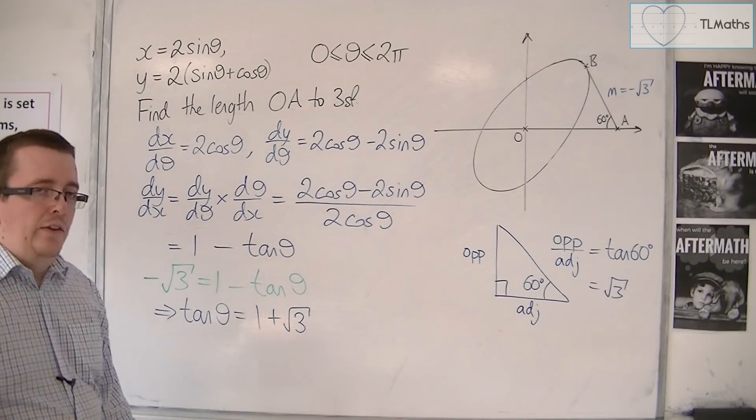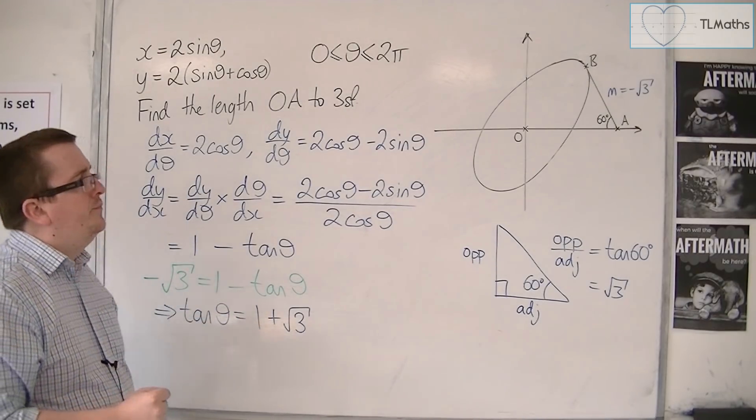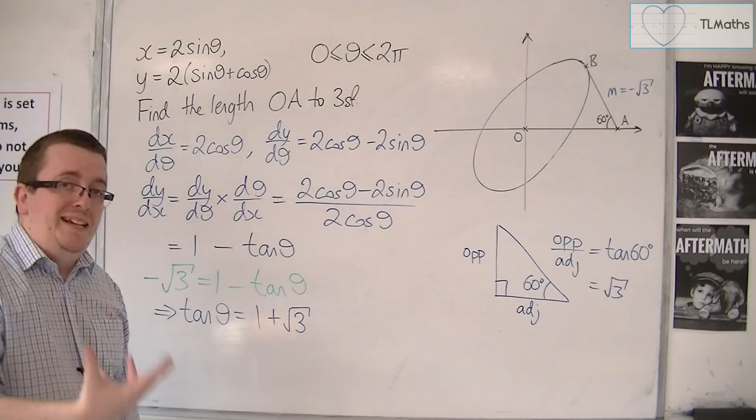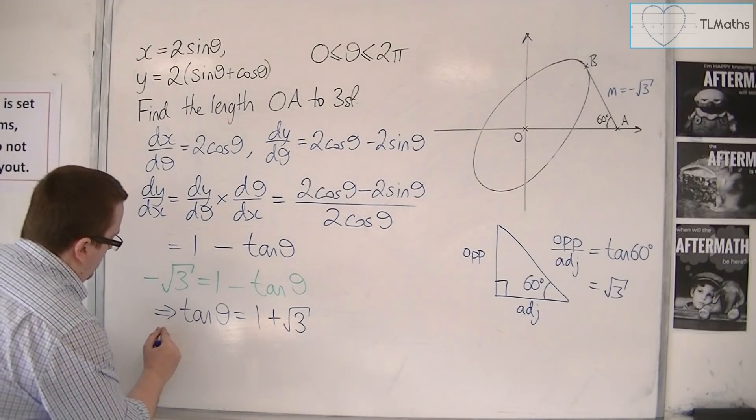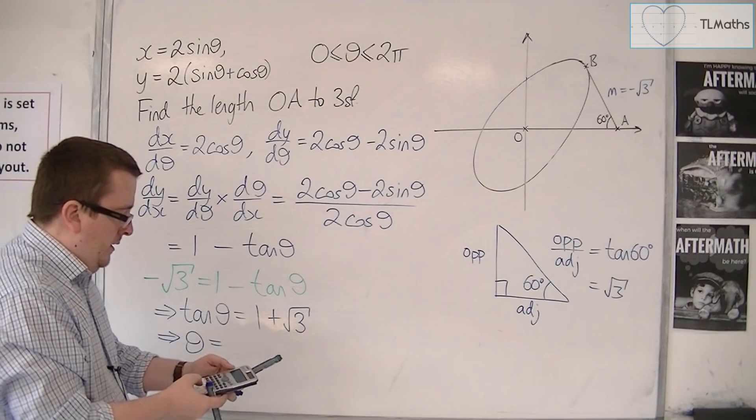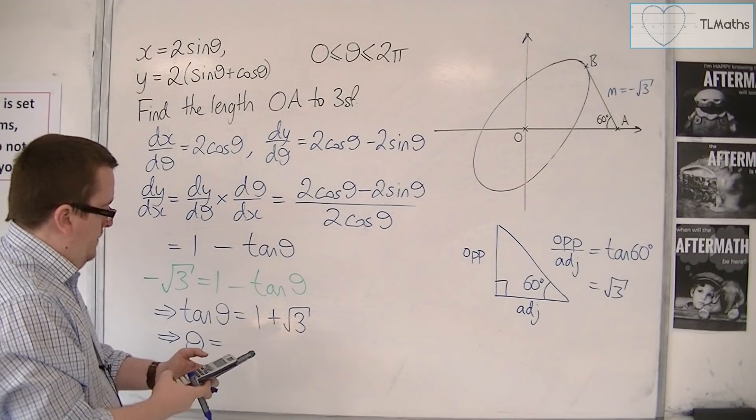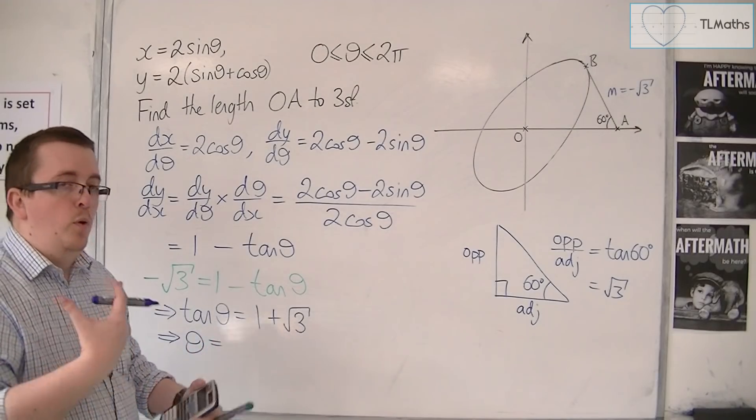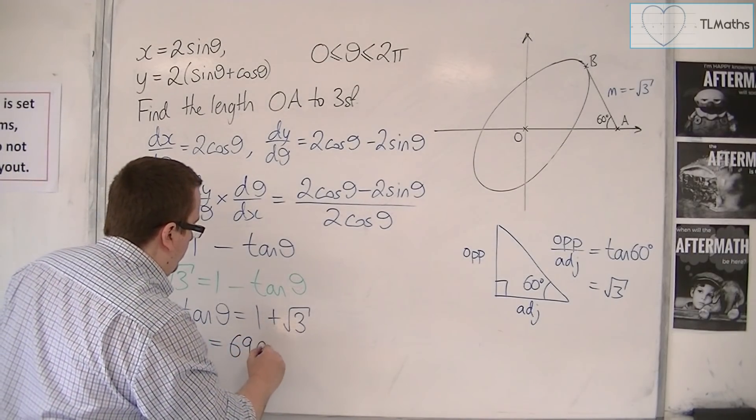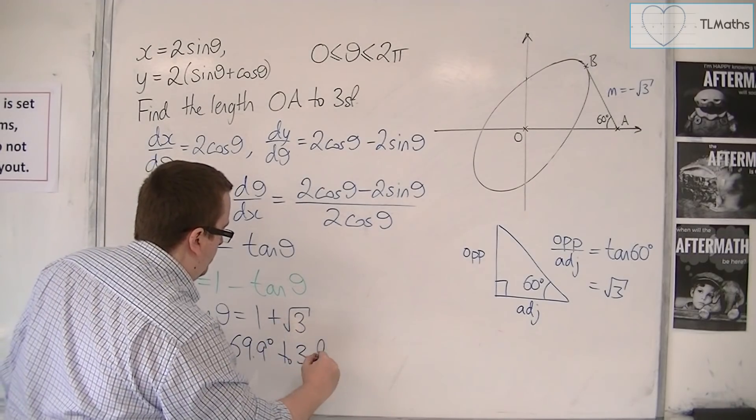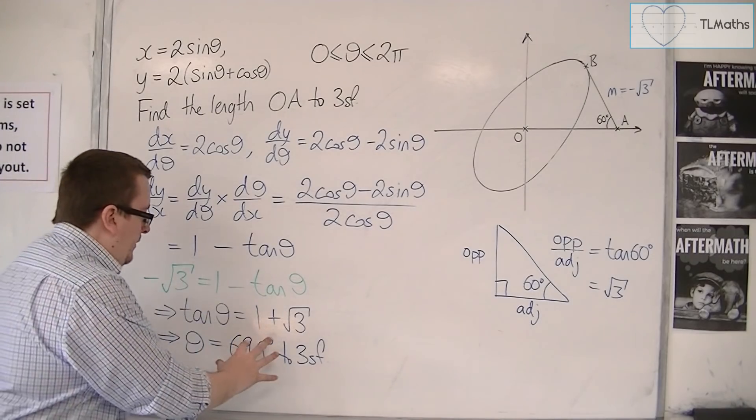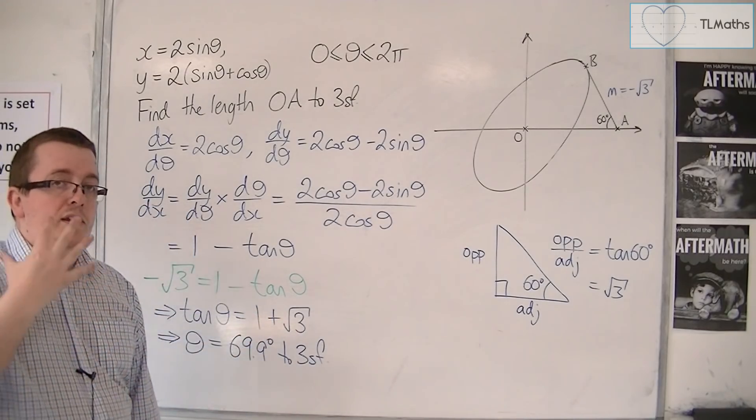That will enable me to now find theta. If I inverse tan both sides, I get 69.9 degrees to 3 significant figures. So when theta is 69.9, I can get the coordinates of B.